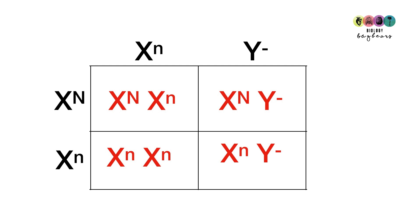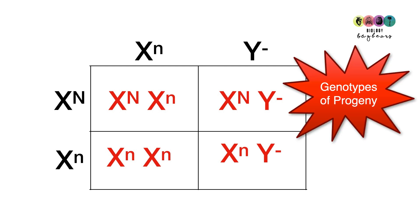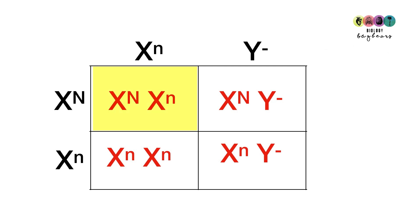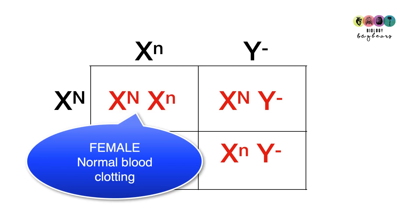So the question asked you to give the genotypes of all of the offspring. So the genotypes are all in red, and that's what you would write. So let's go through the phenotypes, the physical makeup of each of these offspring. So the first offspring is a female because it's XX. The female is heterozygous, so it has a big N and a little n, and so is normal, does not have hemophilia.